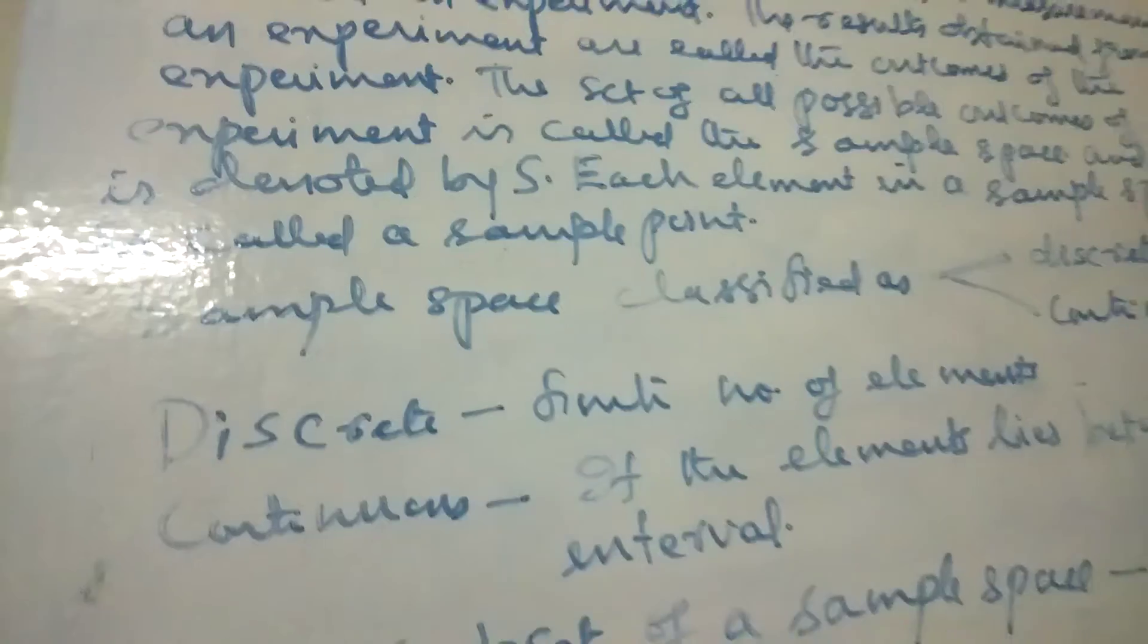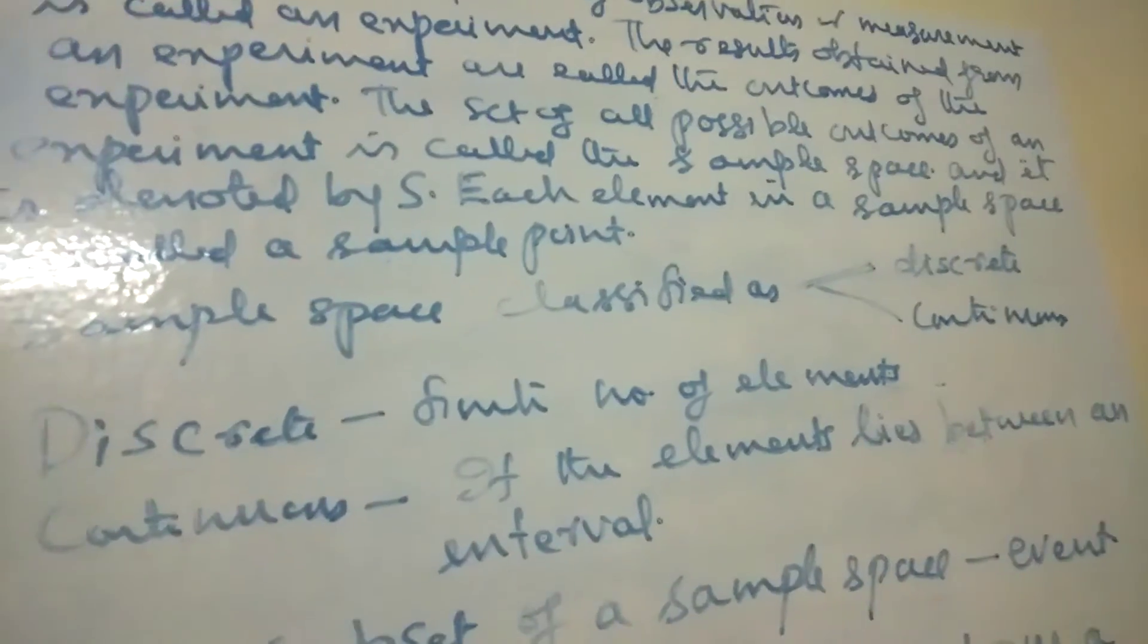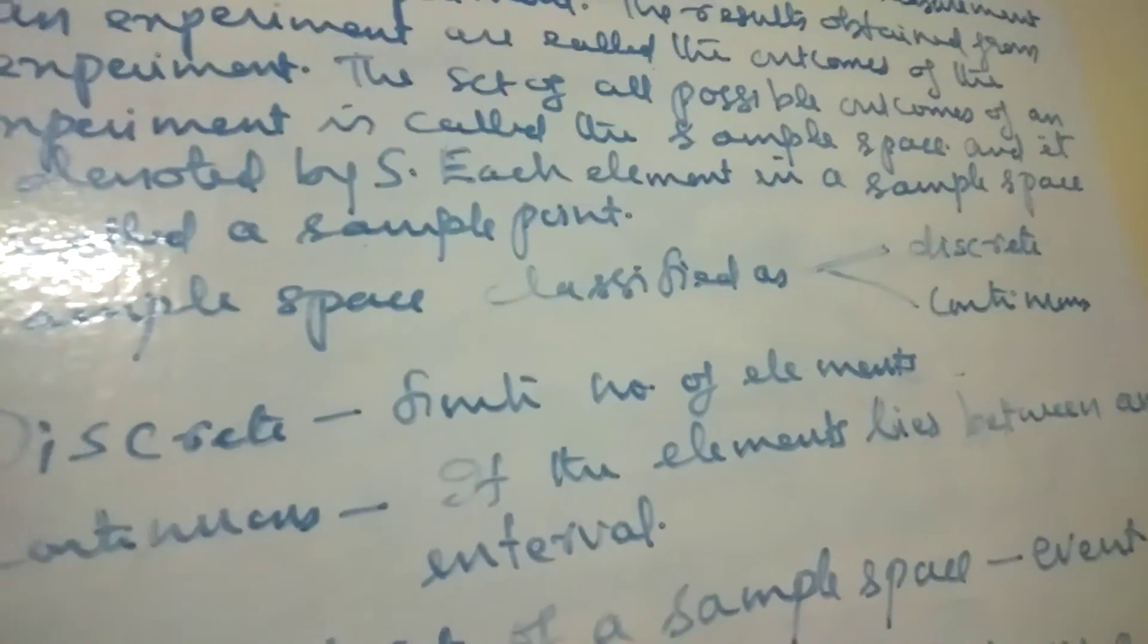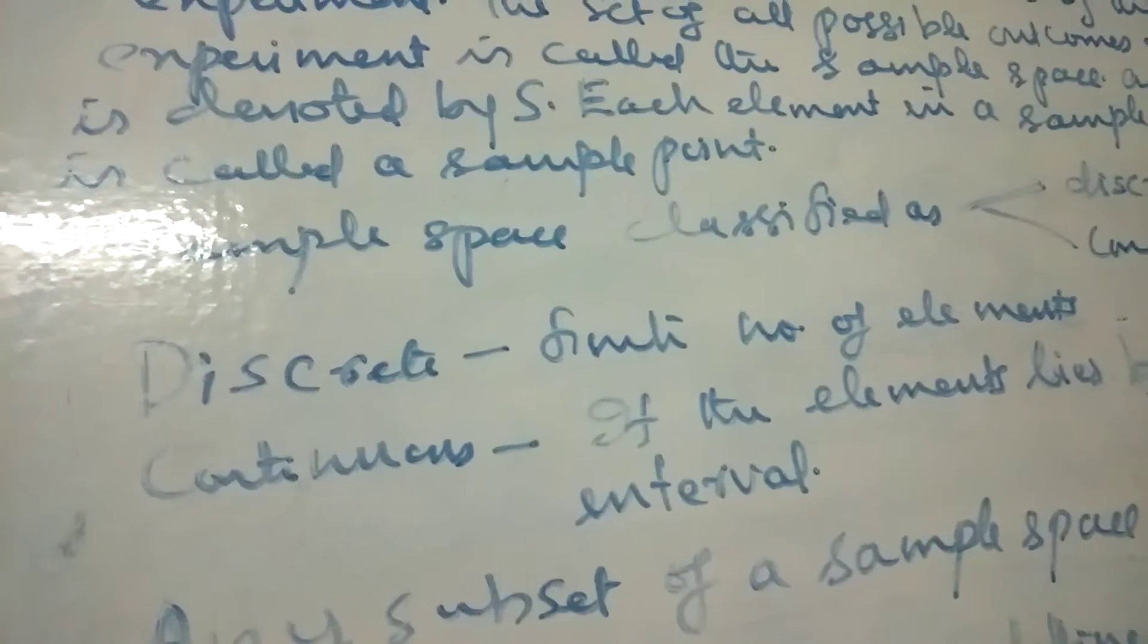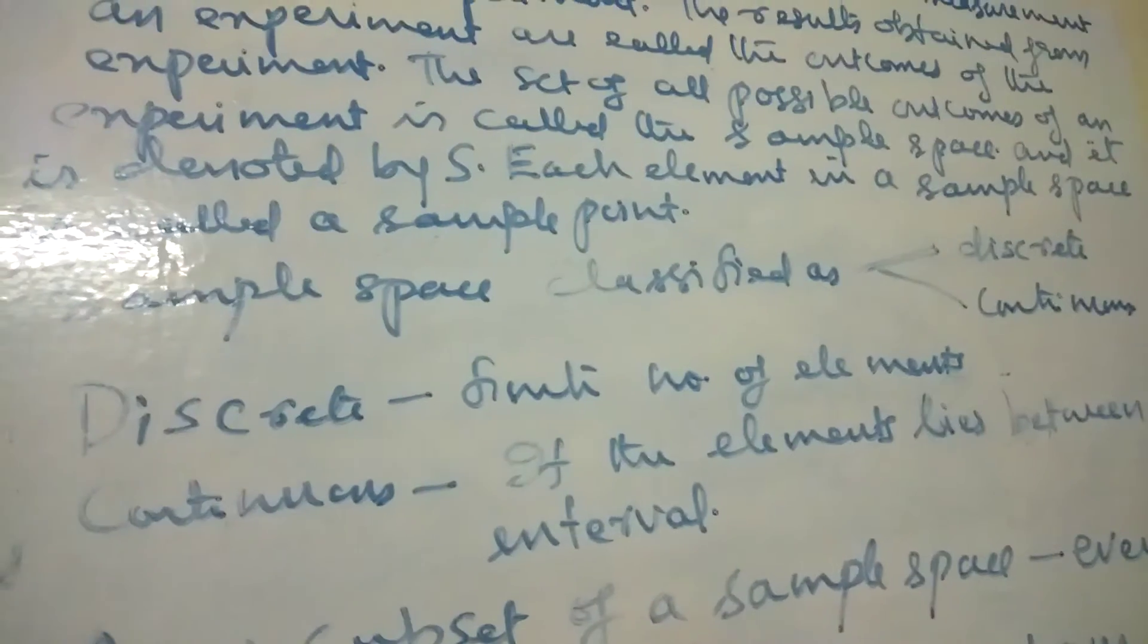Now the sample space is classified according to the number of elements in it. It is classified as discrete and continuous. The discrete sample space is one which has got finite number of elements.